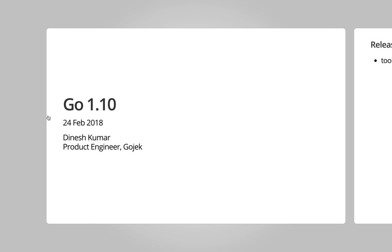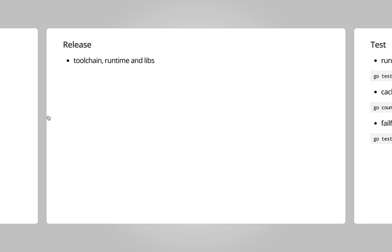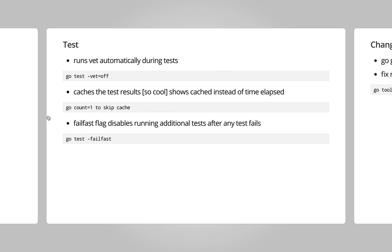There are some cool things to talk about in Go 1.10. There are a lot of changes around toolchains, runtimes, libs, and the core library. There's always changes in GC to optimize things, but I haven't taken down everything — you should go look into the release notes that have the entire information.